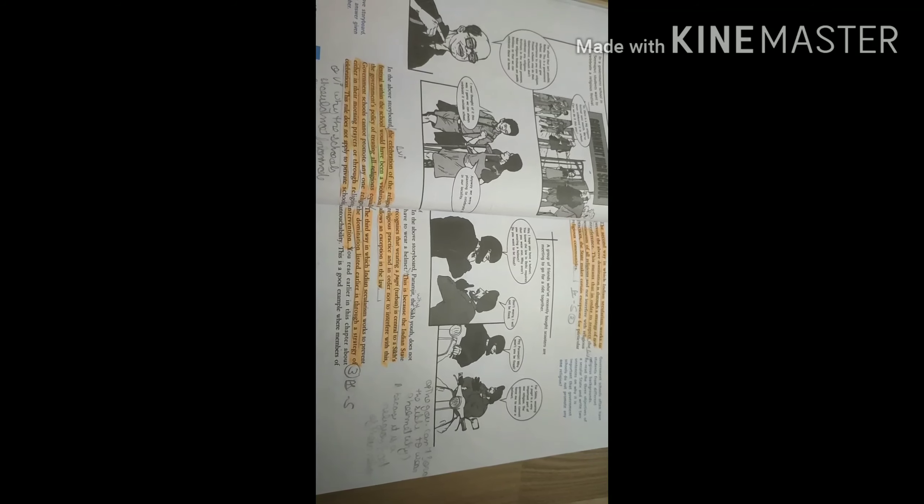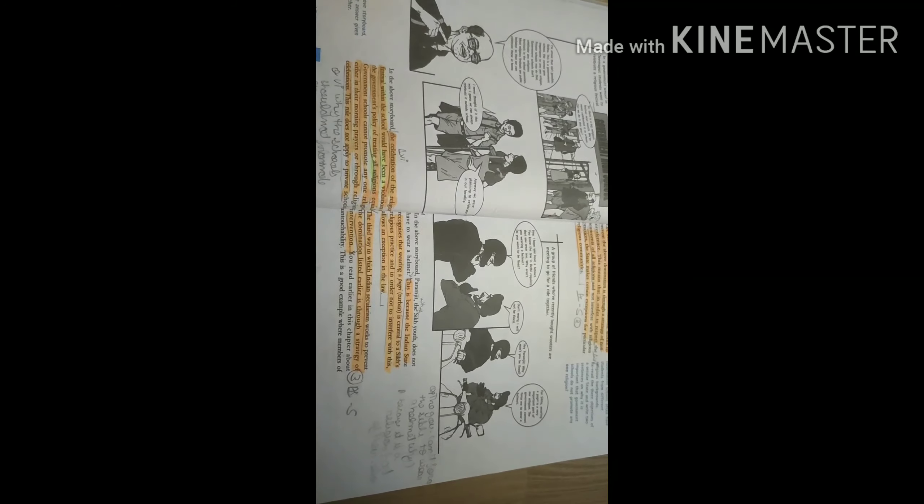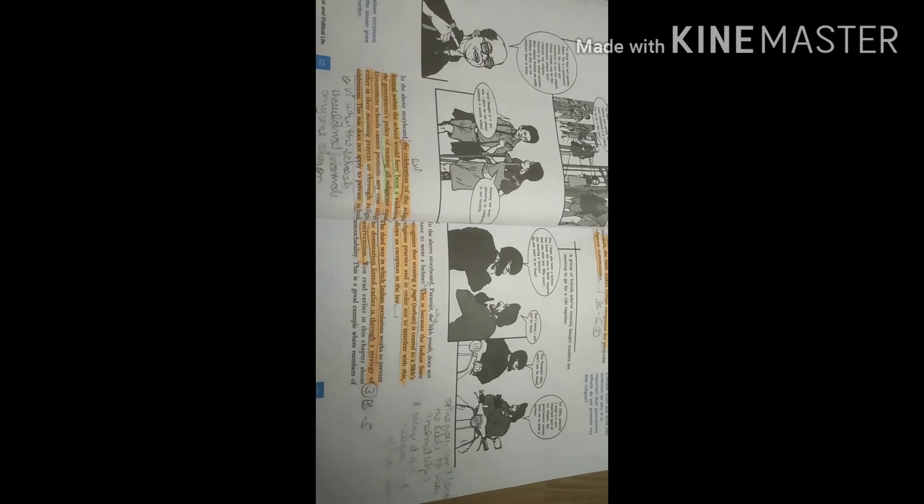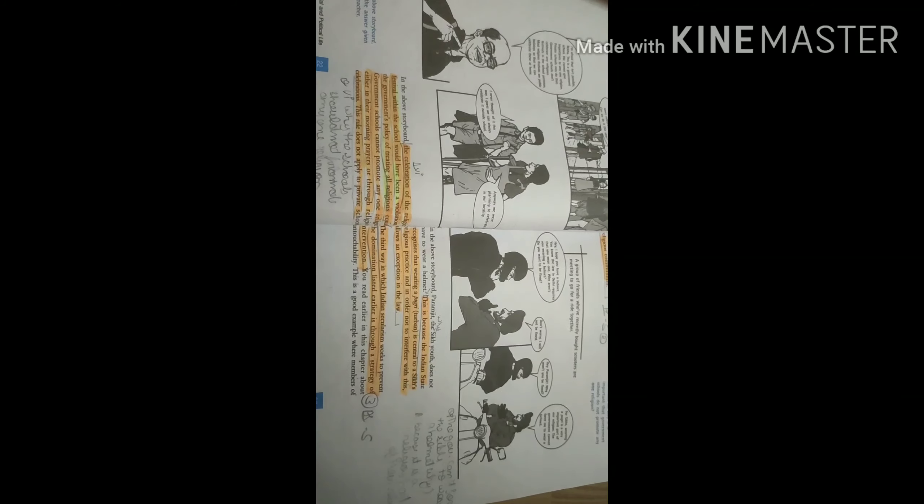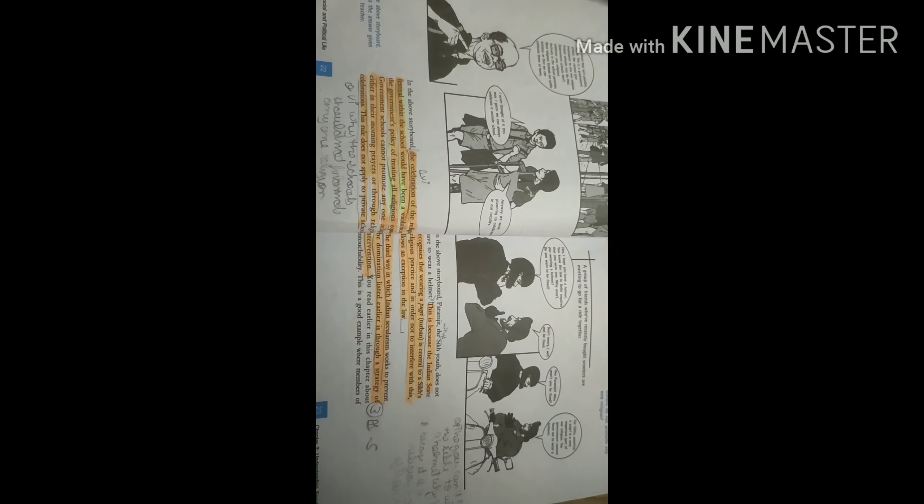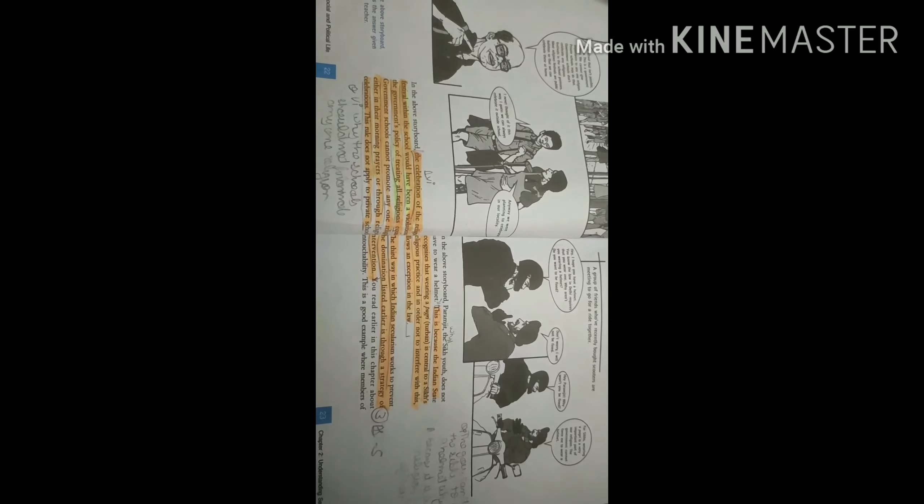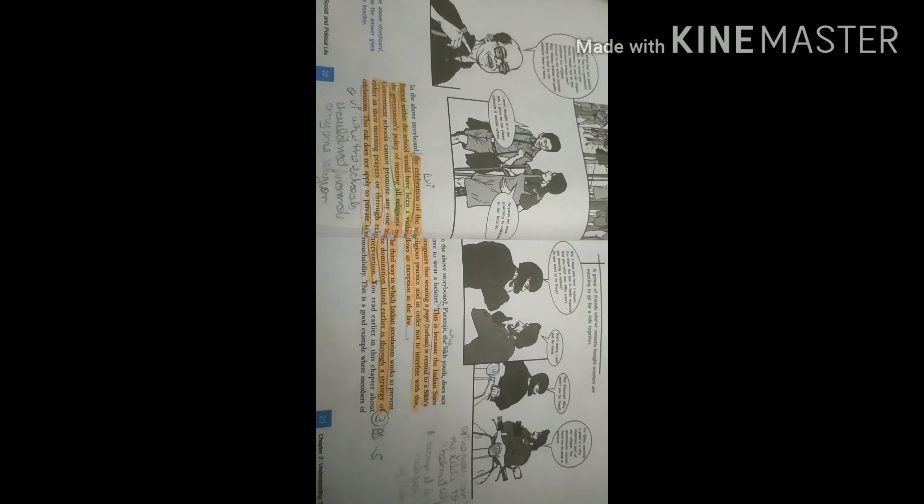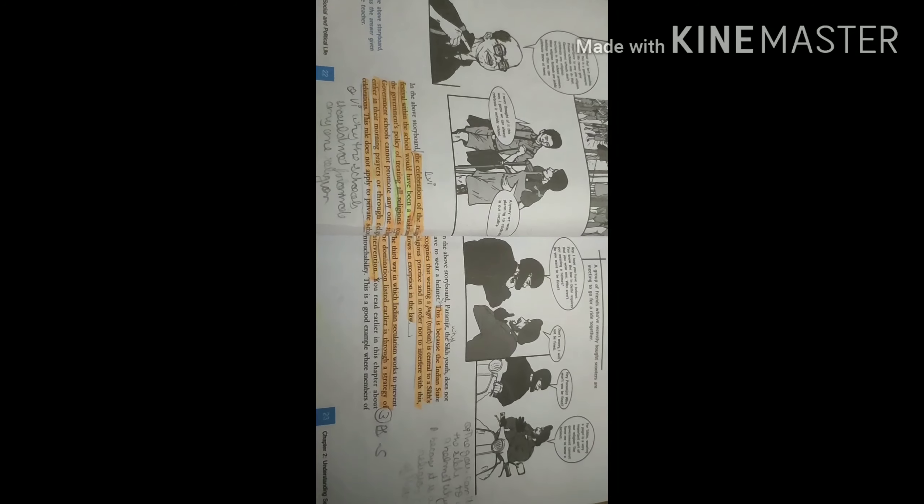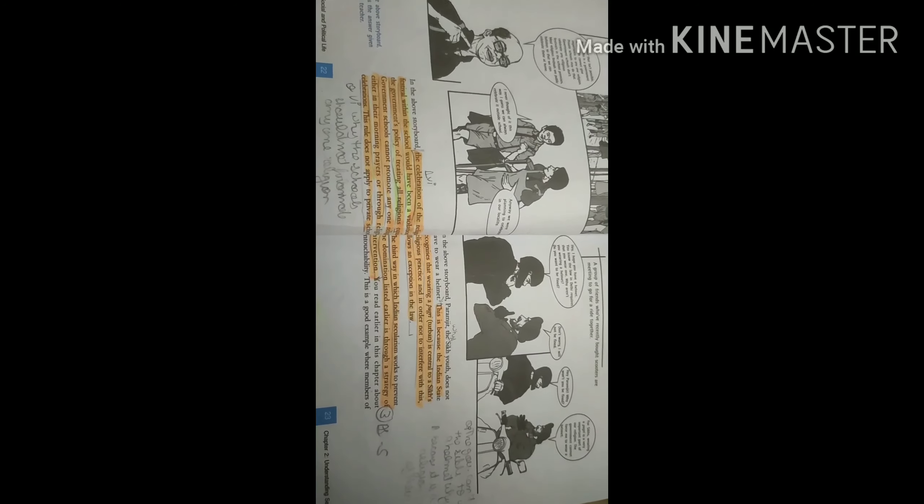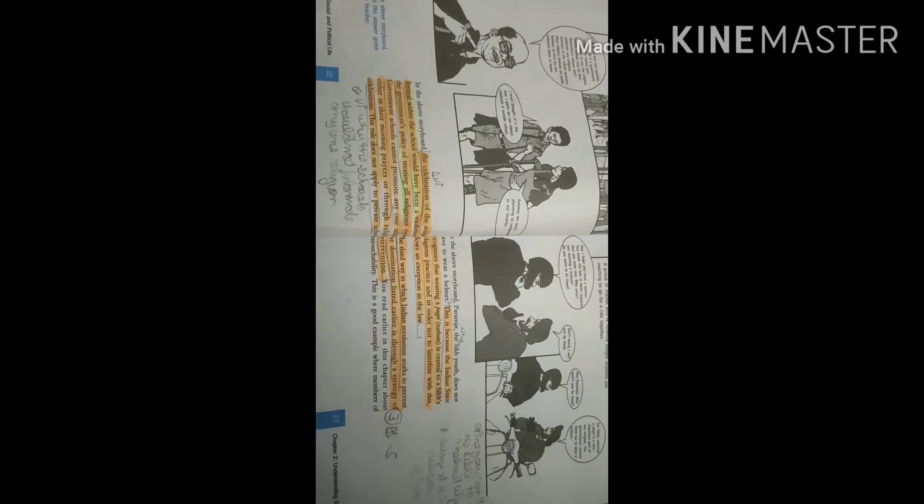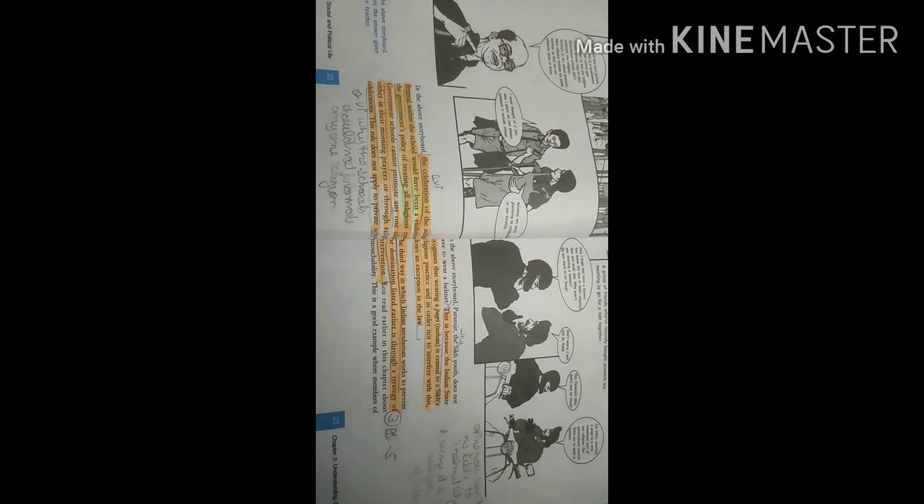To make the point of non-interference clear, you can see in this picture, the boys are coming together. They are going for a scooter ride. You can see one man is wearing a helmet, the other one is a Sikh person and he is wearing a turban. Since it is a religious practice of Sikhs to wear a turban, the state will not interfere or compel him to wear a helmet. For Sikhs, wearing a pagri is a very important part of their religion. The government cannot force them to wear a helmet.